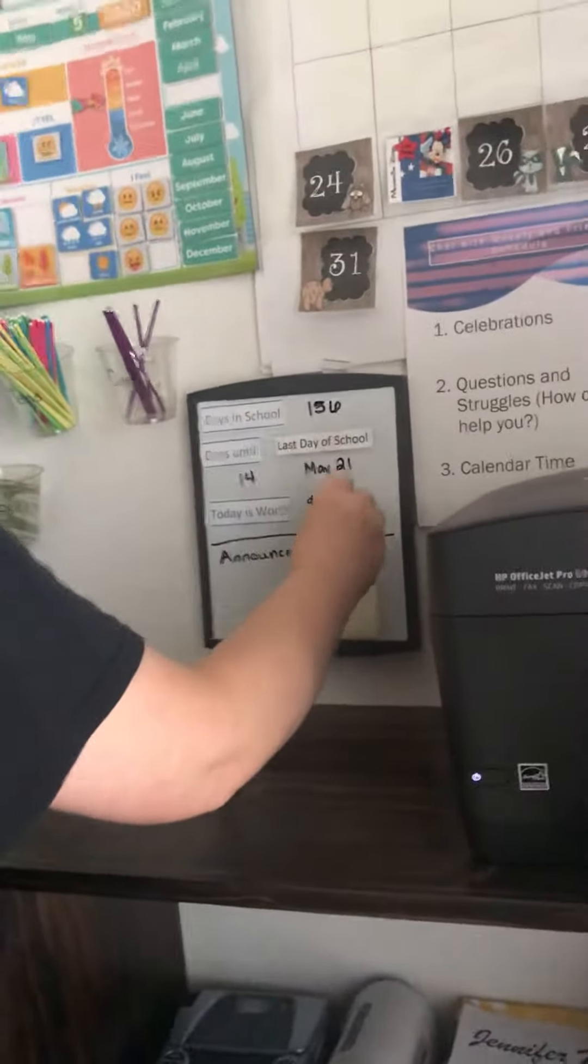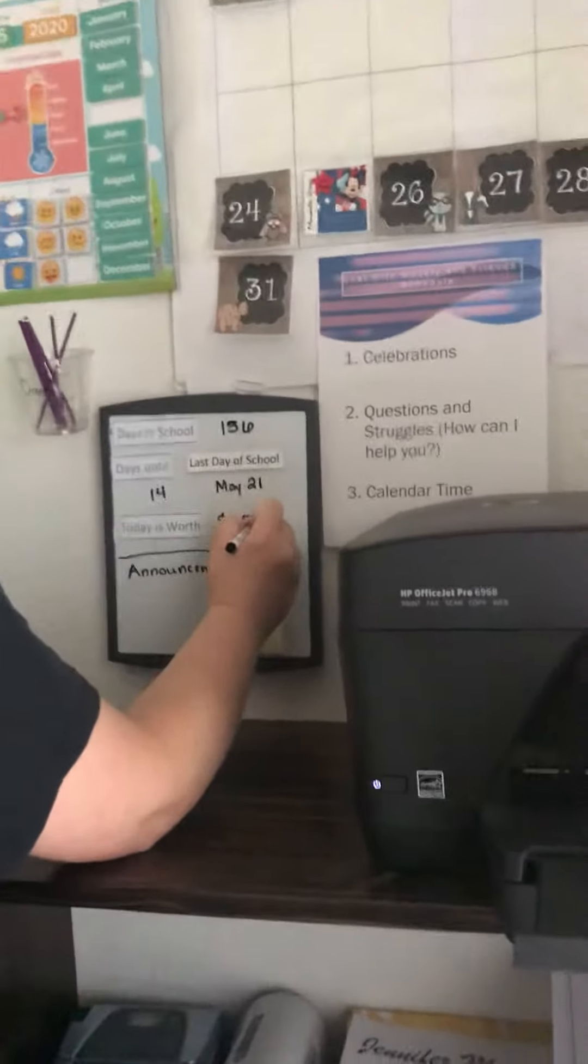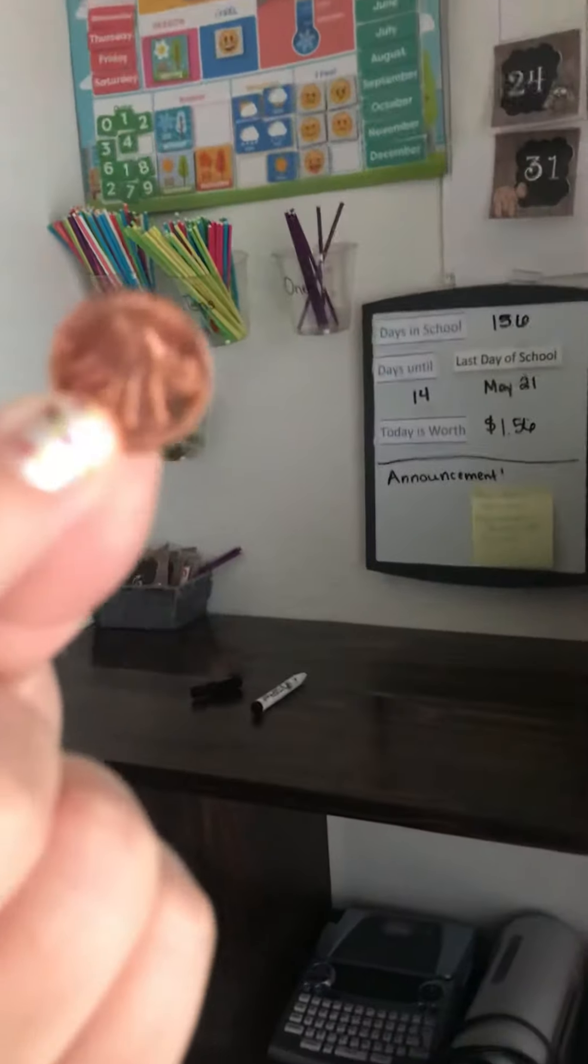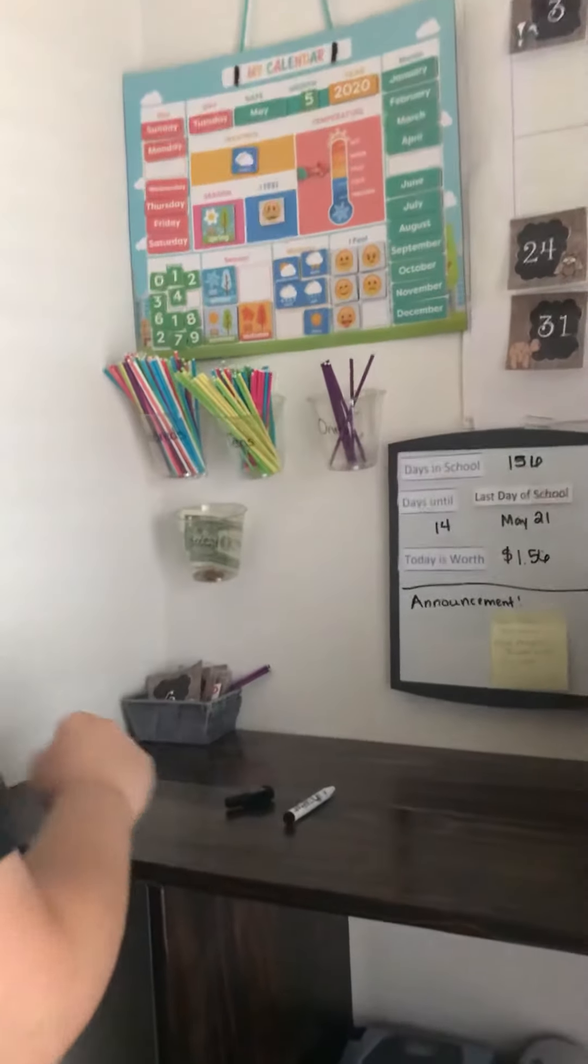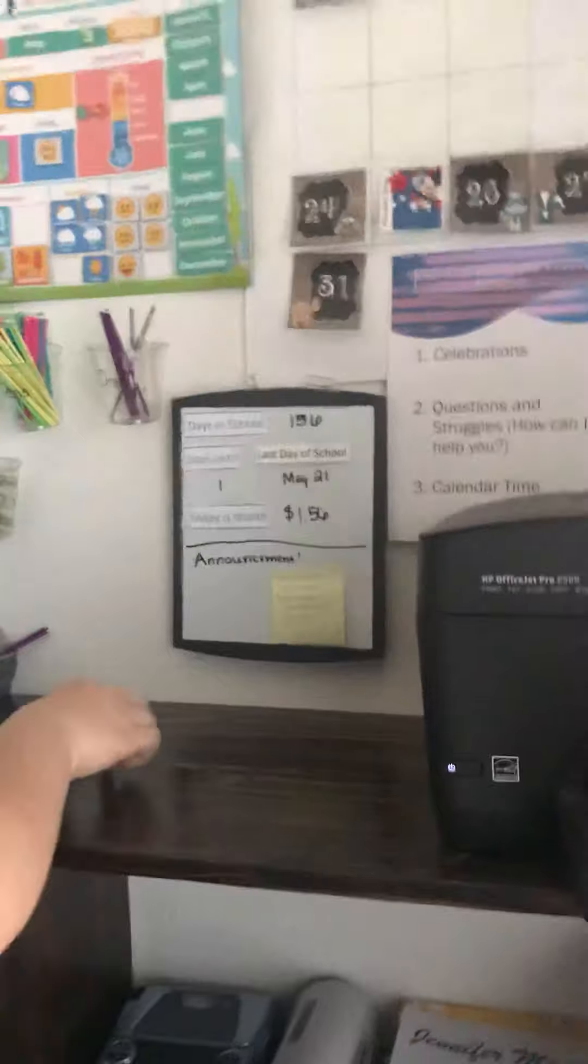And we'll change this one to a six, and here's our penny to add. Now we have a dollar, two quarters, a nickel and a penny. And our countdown days till the last official day of school.